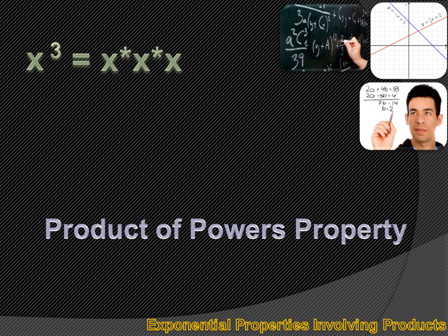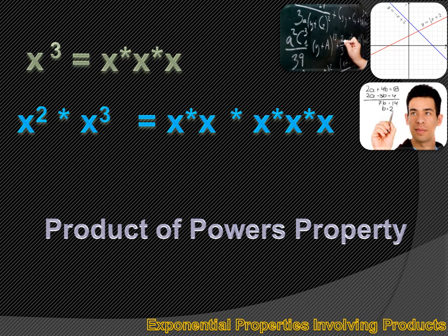Let's move into the first property: the product of powers property. This means we're going to be multiplying bases that are taken to certain powers. For instance, if I were to multiply x squared times x to the third, we can translate x squared into x times x, then multiply that times x to the third, or x multiplied by itself three times. So x squared times x to the third equals x times x times x times x times x — five x's, or x to the fifth power.